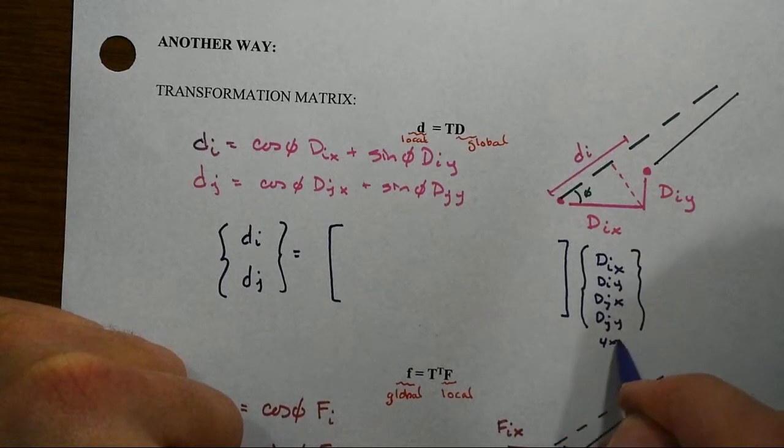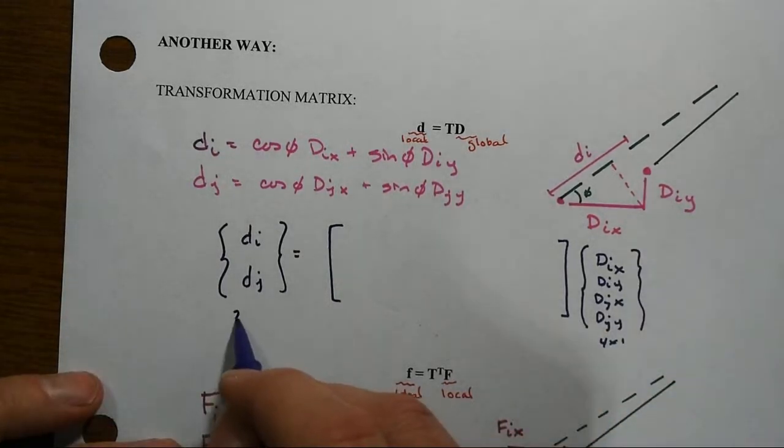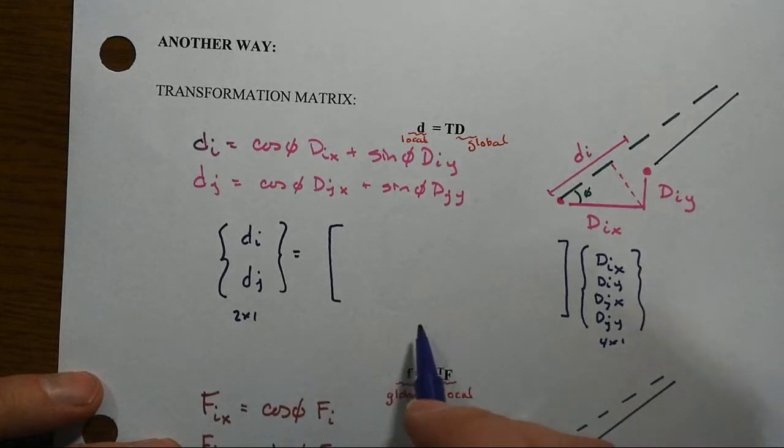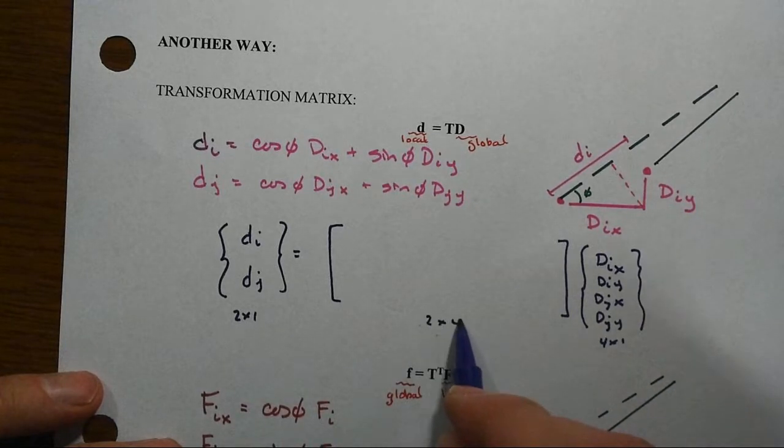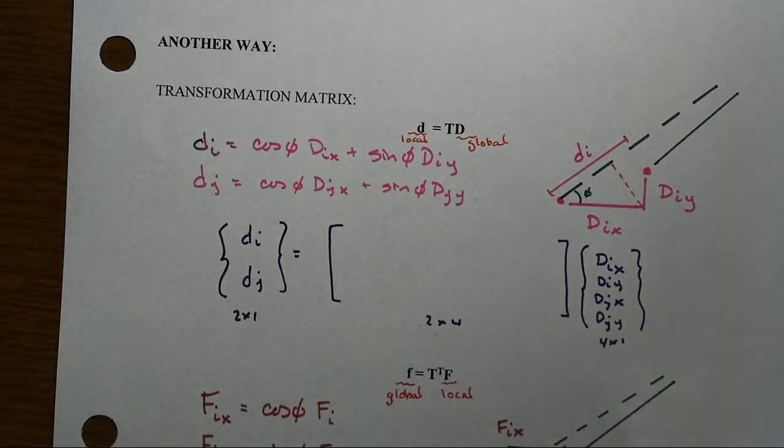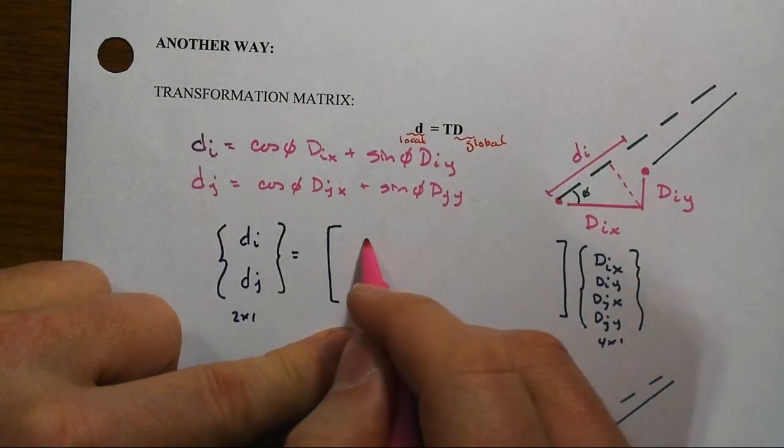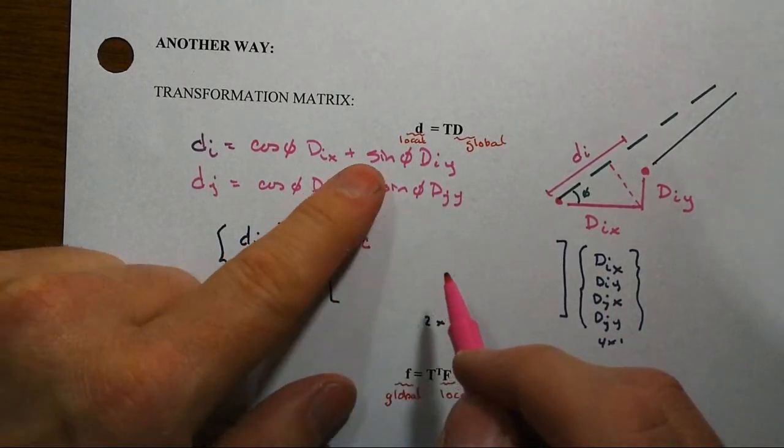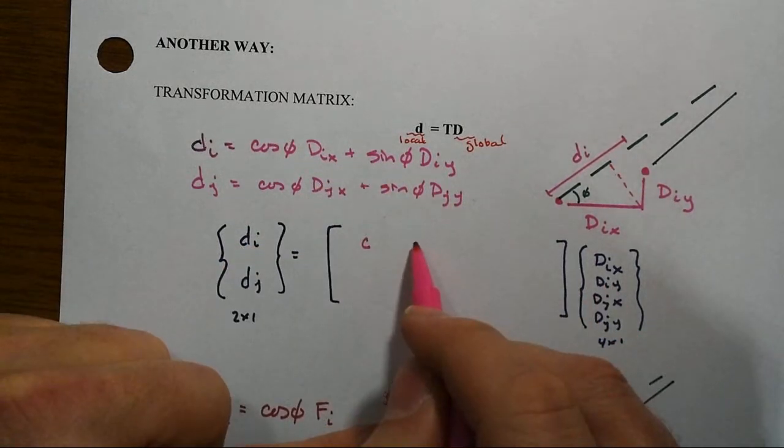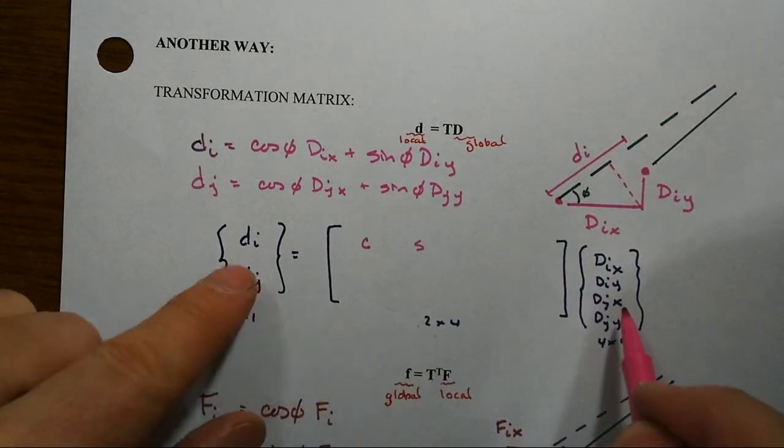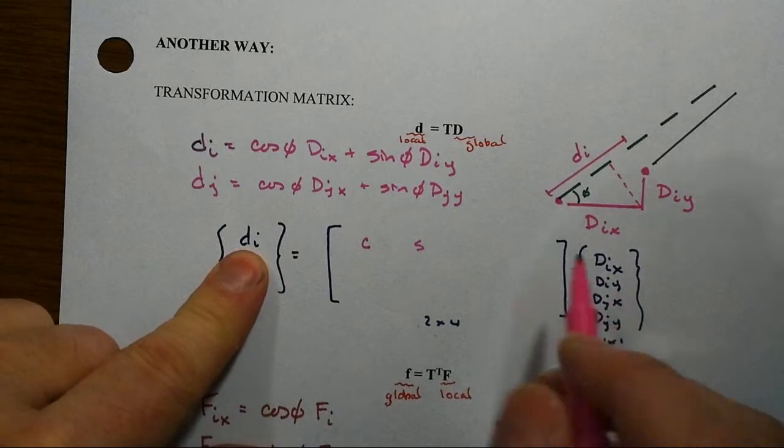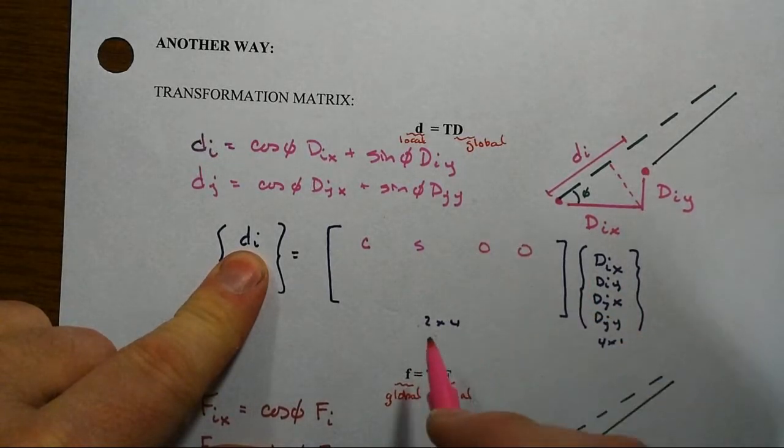So this is a 4 by 1, this is a 2 by 1, so that means we need a 2 by 4 to make this work out right. And that's where we come in then and say alright, we've got cosine of phi times DIx, that's C for the cosine, plus sine times the DIy. But for DI we don't have any of the j contributions so that's a 0 and a 0.